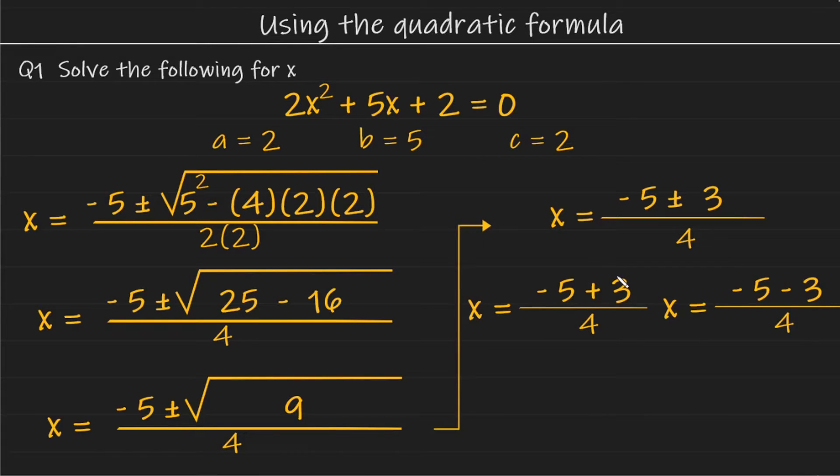Here we have two equations, minus 5 plus 3 over 4, and minus 5 minus 3 over 4. Simplifying the numerators, this left-hand equation here will give us minus 2 over 4, which simplifies to give us minus a half. And that is one of our solutions.